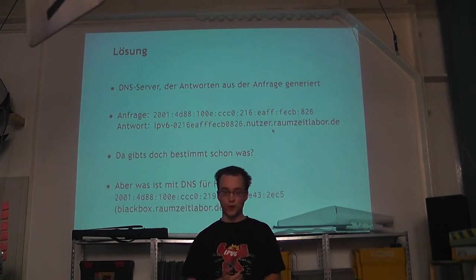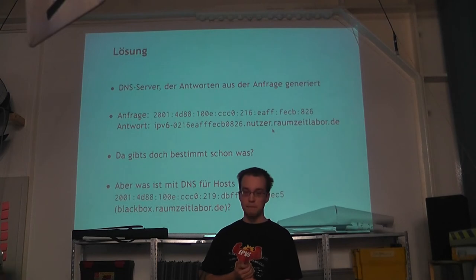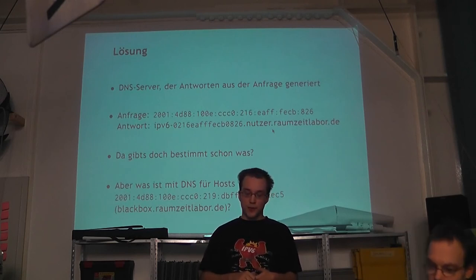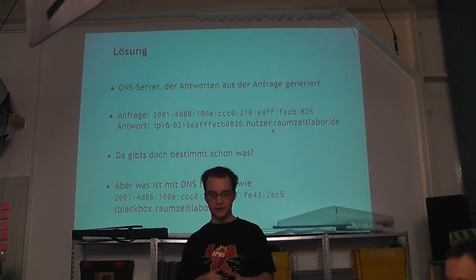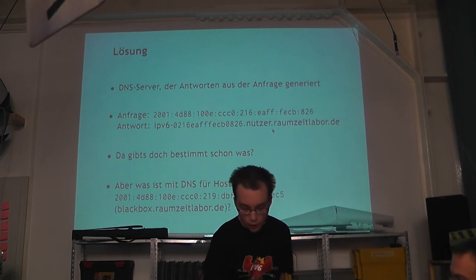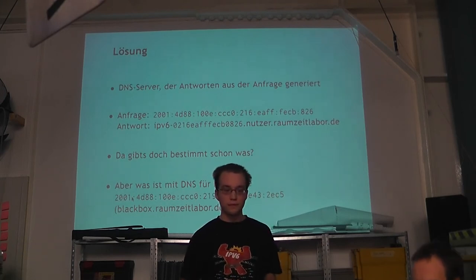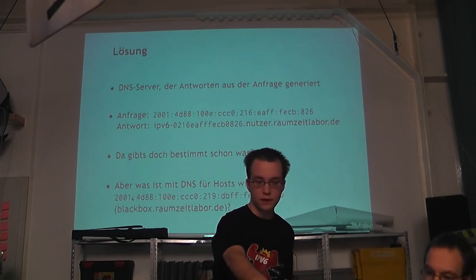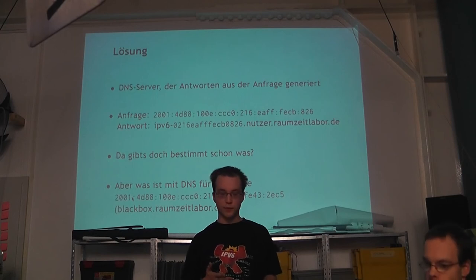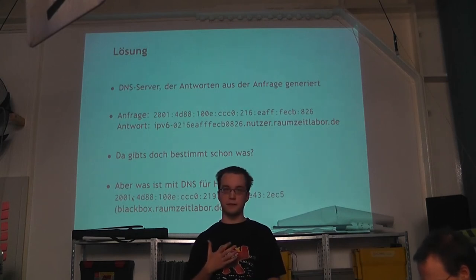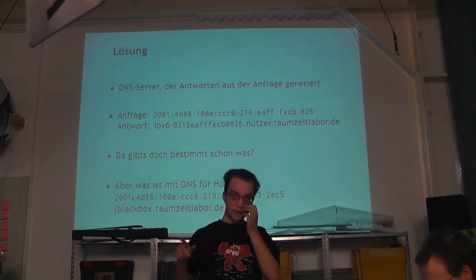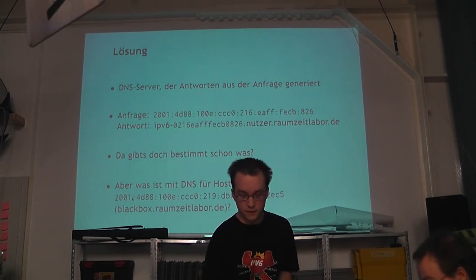Now you might think: surely there's already a solution for this — we can't be the only ones with this problem. And indeed that's true. There is already a solution from a Japanese IPv6 provider. But the problem with that solution is that it essentially assumes absolutistically that you deliver this zone only via that method. We also have hostnames like blackbox.raumzeitlabor.de that exist in this network. And the problem is that those would lose their reverse entry — meaning if you resolved the hostname of the blackbox, it would no longer correctly resolve forward and backward. So we can't use that existing solution.